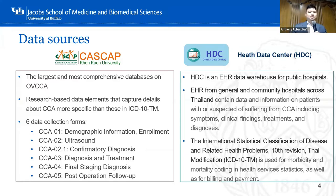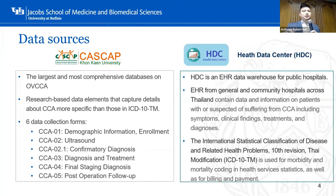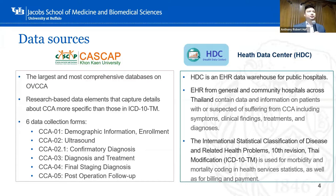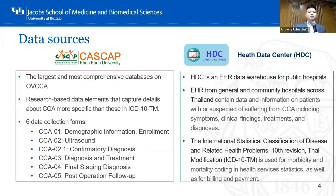On the other hand, CASCAP is the largest and most comprehensive database about OV and CCA. It is a research-based data element that captures detail about CCA more specific than those in ICD-10. They collect data based on CASCAP data collection forms covering demographic information used to screen participants into the cohort. They also have an ultrasound screening form. Another form, CASCAP 02.1, is a confirmatory diagnosis form used to confirm ultrasound screening of suspected CCA cases using MRI, CT scan, or other procedures. The remaining forms cover diagnosis, treatment, final staging diagnosis, and post-operation follow-up.